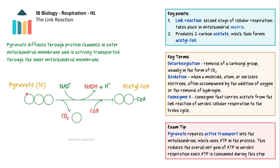The 3-carbon pyruvate produced during glycolysis then enters the mitochondrion. Since pyruvate is negatively charged it cannot simply diffuse across the mitochondrial membranes. Pyruvate does diffuse through the outer mitochondrial membrane but it requires specific protein channels. However, the inner mitochondrial membrane is impermeable to pyruvate, so it must be actively transported into the matrix by transporter proteins, a process that requires ATP. Once inside the mitochondrial matrix, pyruvate undergoes the link reaction.